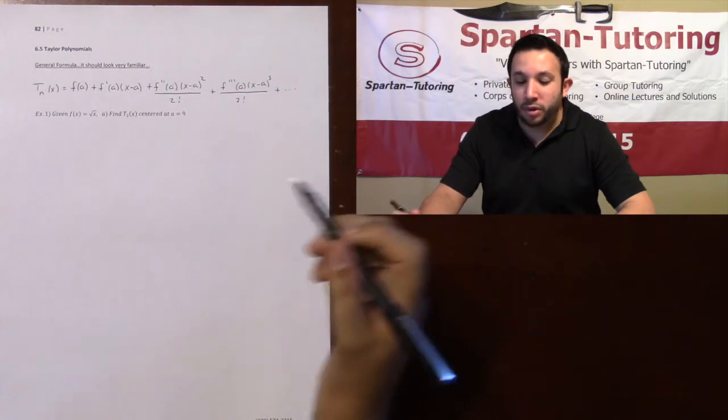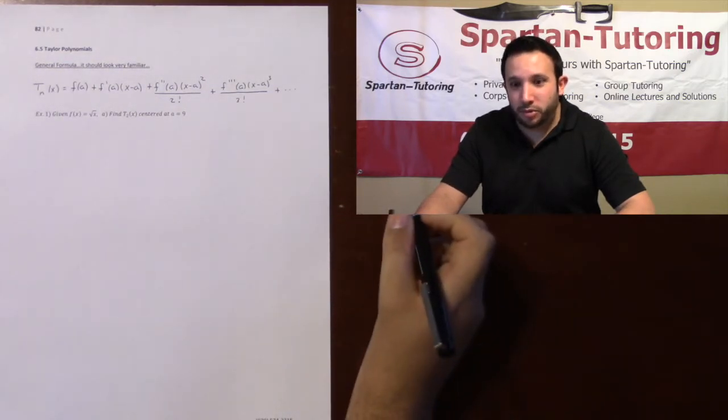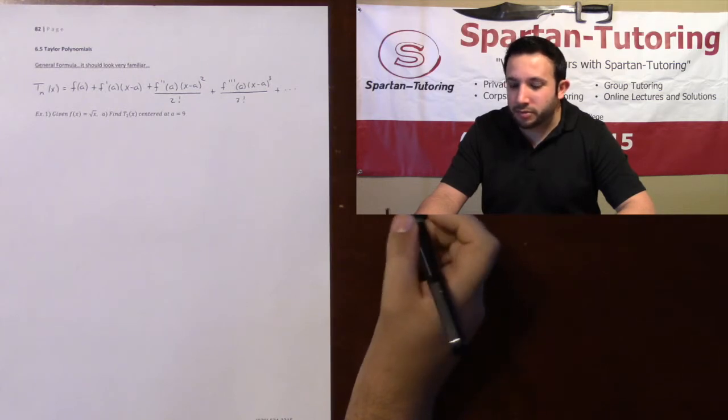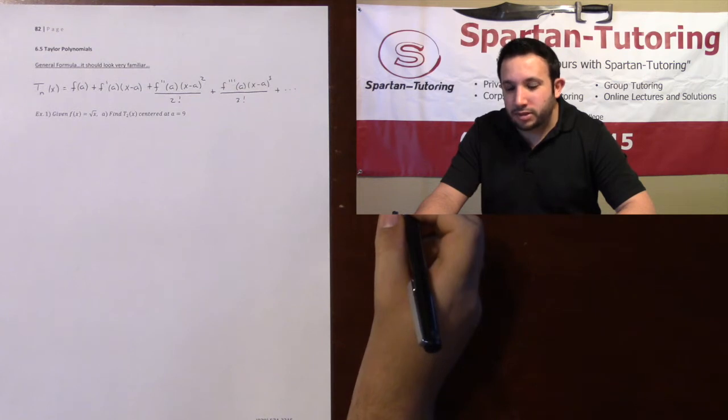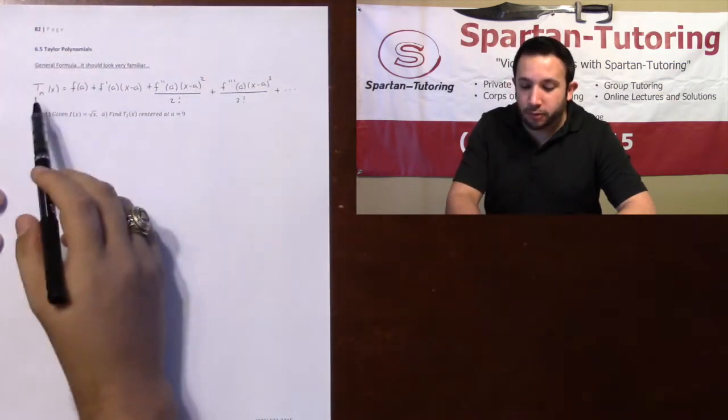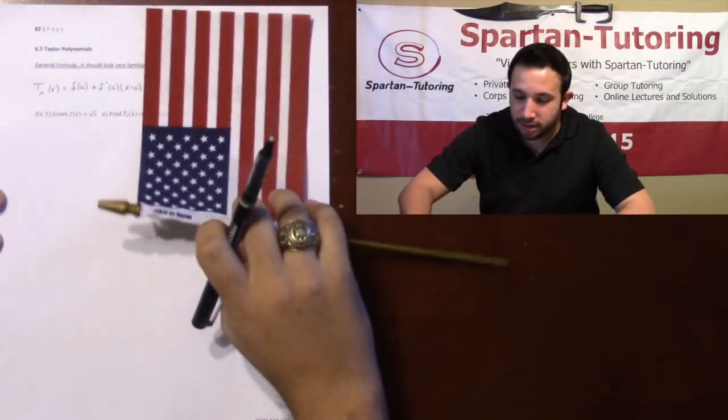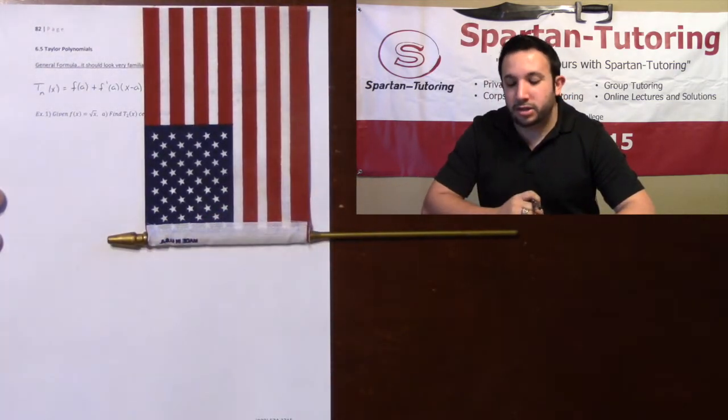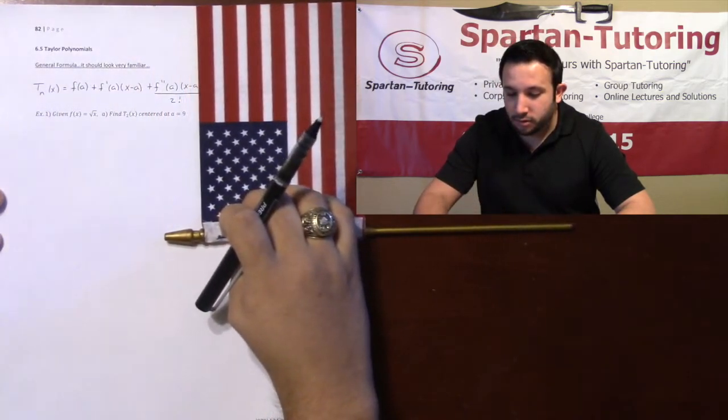Howdy, in this video we're going to talk about Taylor polynomials. Now, I would actually be a little bit upset if my Cal 1 students missed this problem because you did this exact same thing back in Cal 1. Let's see if you recognize this equation. This is the general formula for a Taylor polynomial, but what is it? What does this look like? Wasn't that just linear approximation?